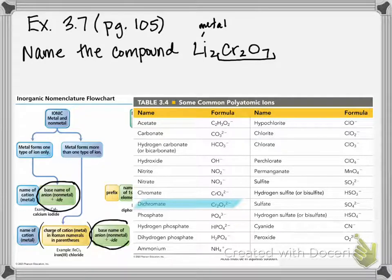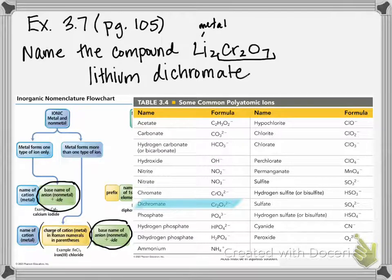So the way that you name an ionic compound that contains one of these polyatomic ions is you write the name of the metal, or whatever's first, so it's lithium, and then you simply write the name of the polyatomic ion. So Cr₂O₇ is called the dichromate ion, so it's literally lithium dichromate, and that's it.